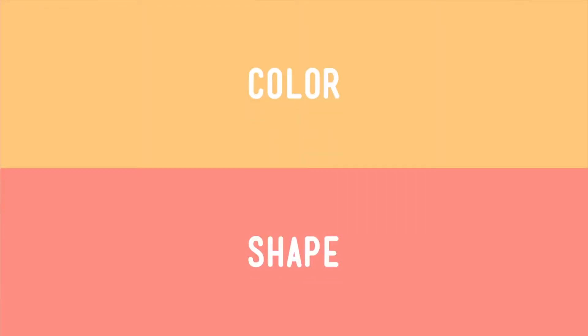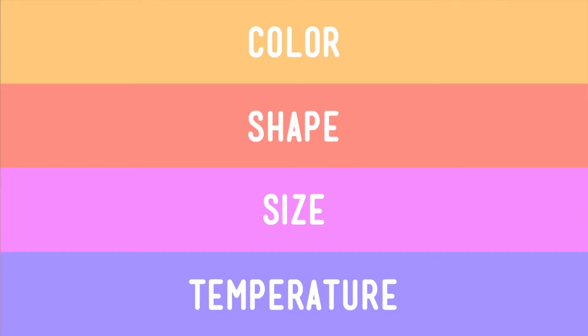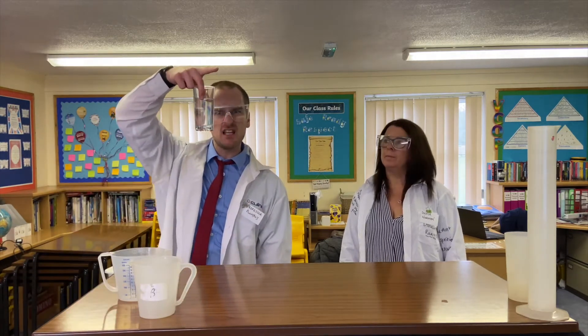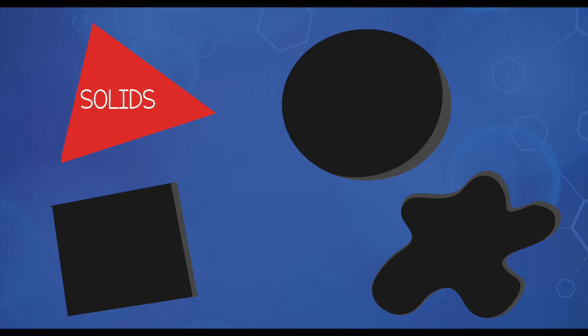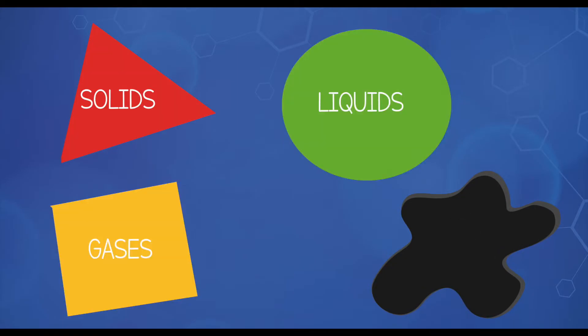All solids, liquids and gases are materials or objects made of matter. All materials have properties or traits that help us identify and recognise them, like colour, shape, size, temperature or weight. So there are solids like this apple, gas like the air around us, and liquids like the water in this cup. But there are some materials that can't be grouped into any of those categories.